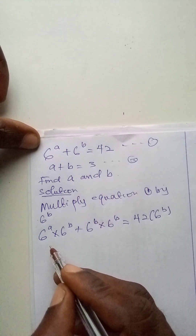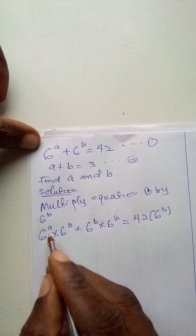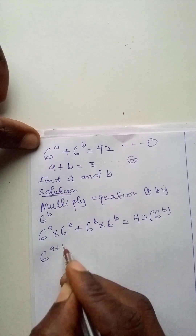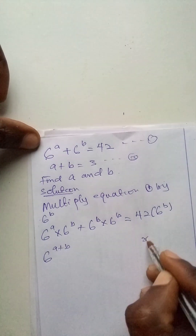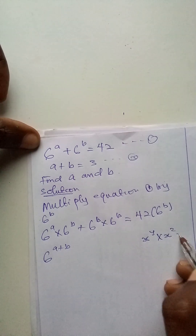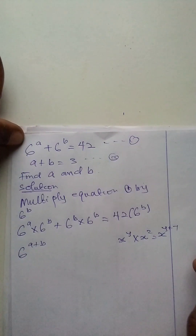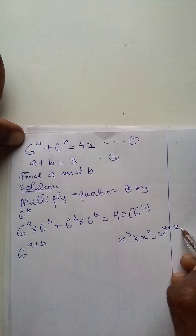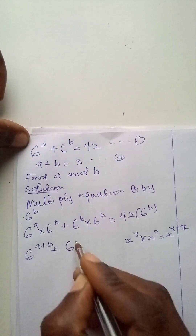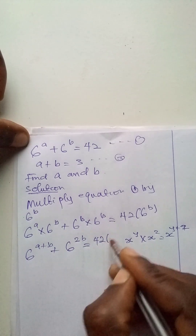Now, if we apply the law of indices, 6 raised to power A times 6 raised to power B becomes 6 raised to power A plus B. Because if I have x raised to power Y multiplied by x raised to power Z, it gives me x raised to power Y plus Z. That is what I applied here. So here we have 6 raised to power A plus B, plus 6 raised to power 2B, equals 42 multiplied by 6 raised to power B.